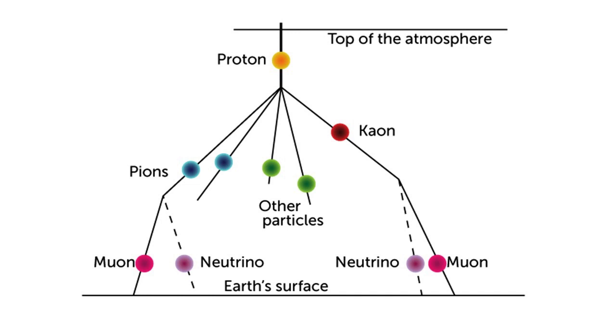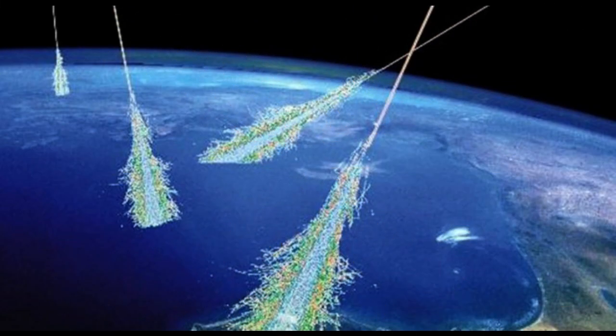Due to the extremely high speed of muons, from the Earth's point of view, the time they experience is significantly extended. This time dilation is what allows muons to reach the Earth's surface, despite having traveled several thousand meters.